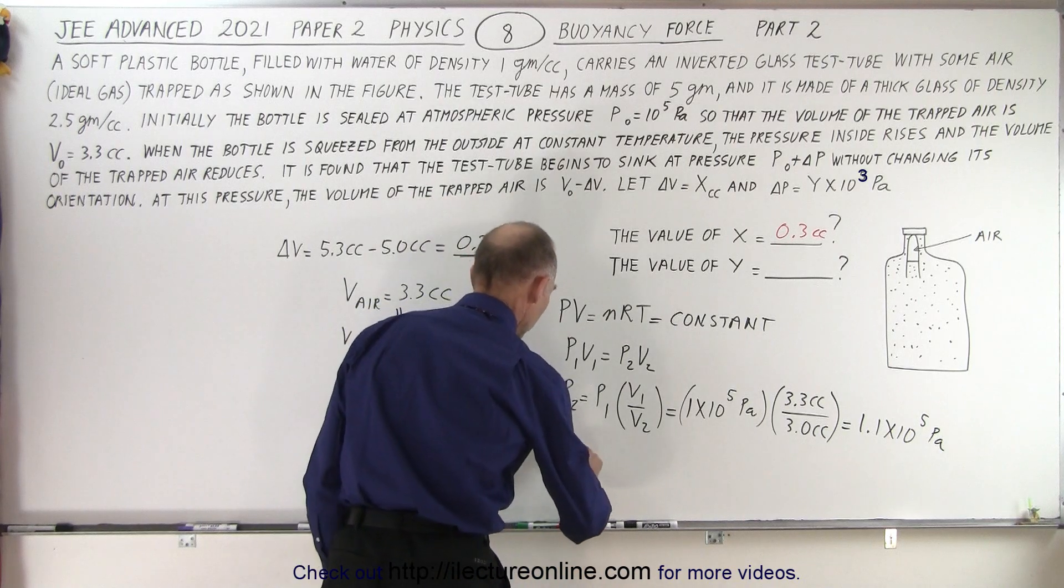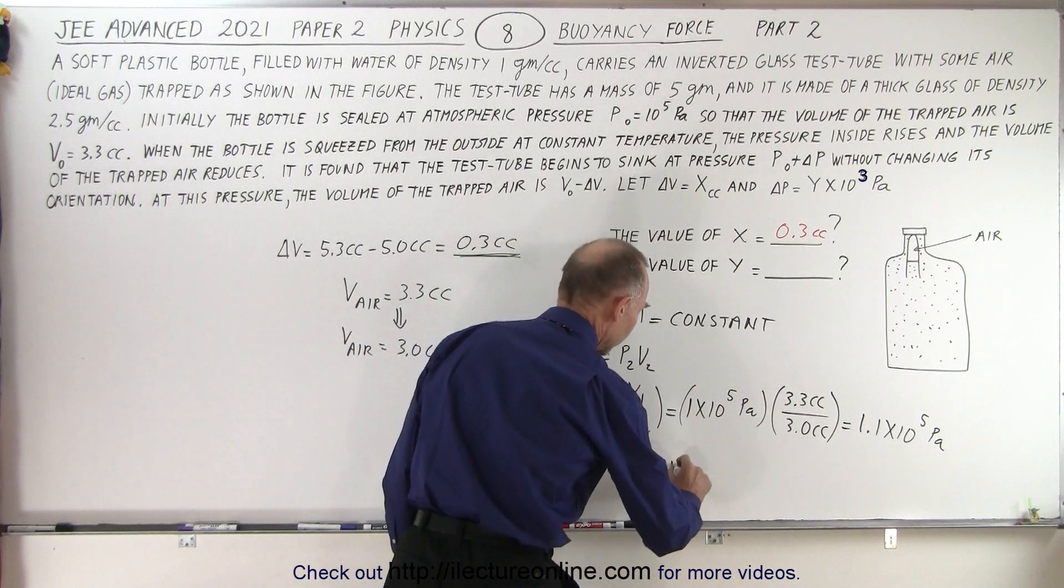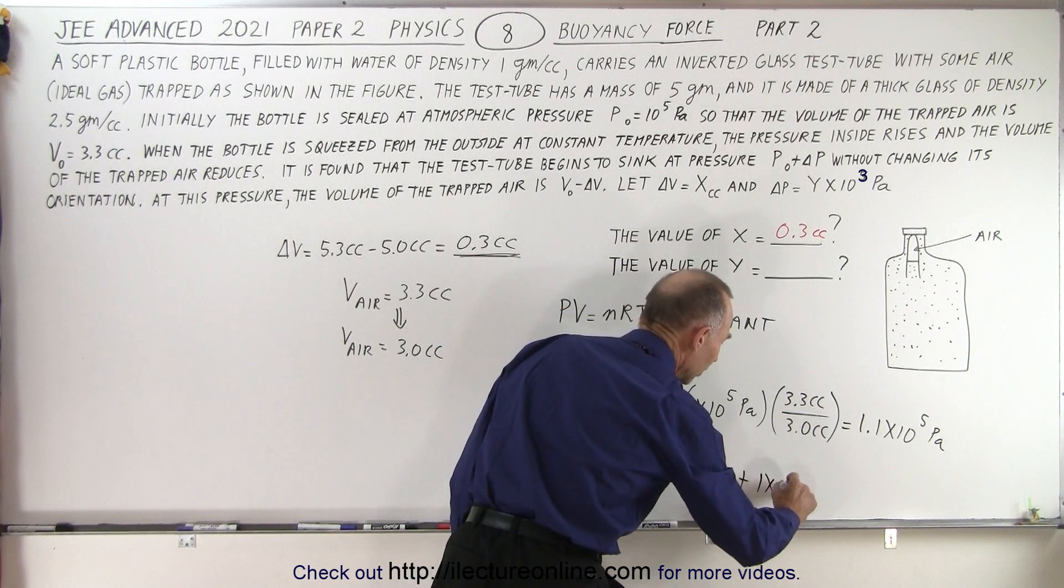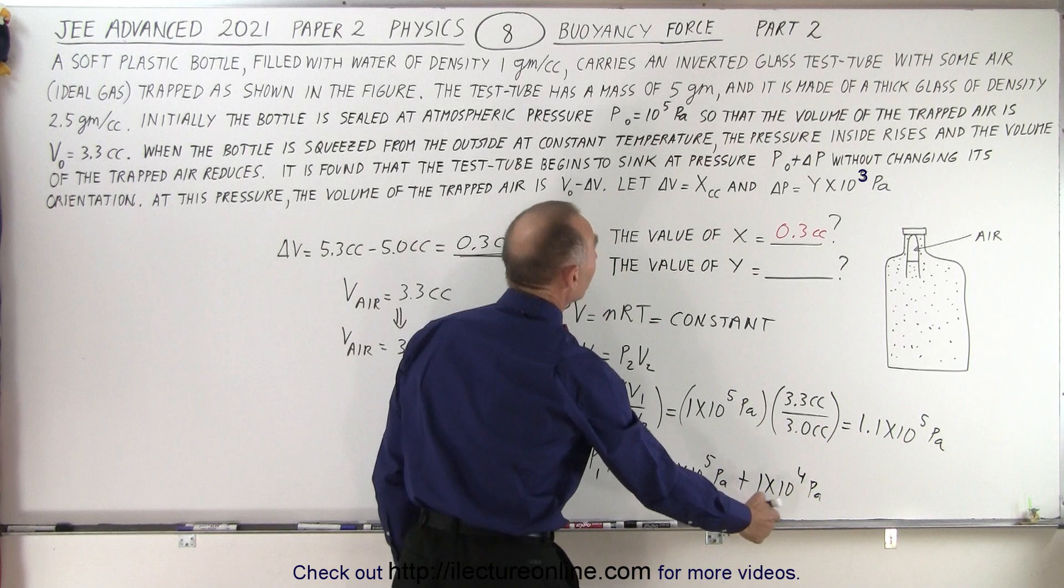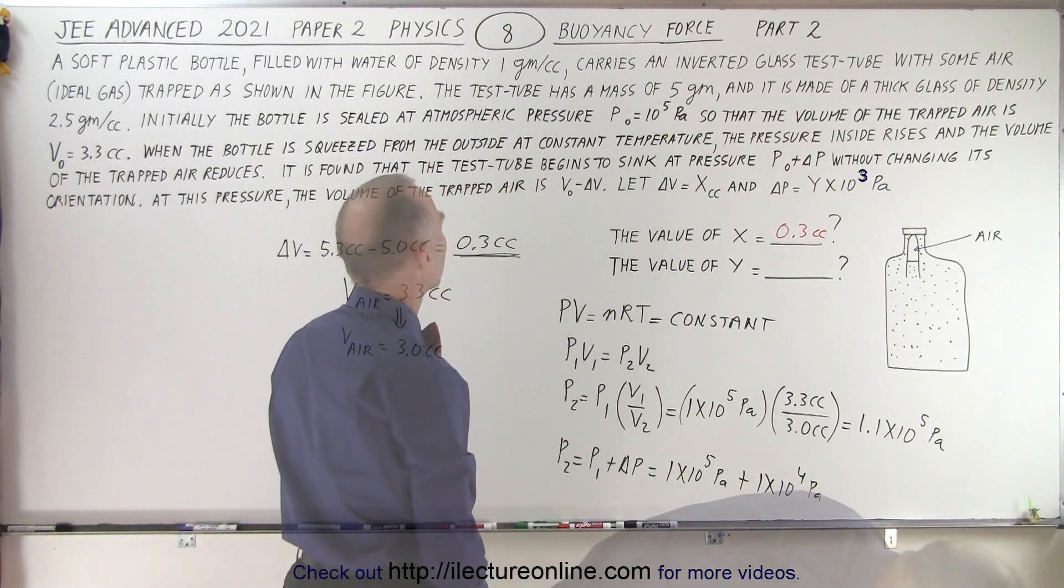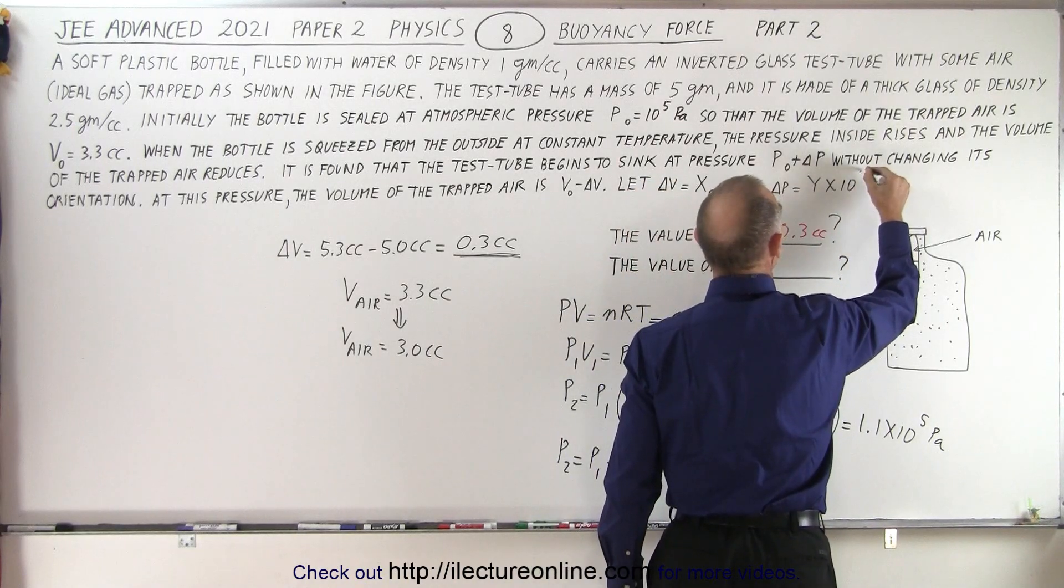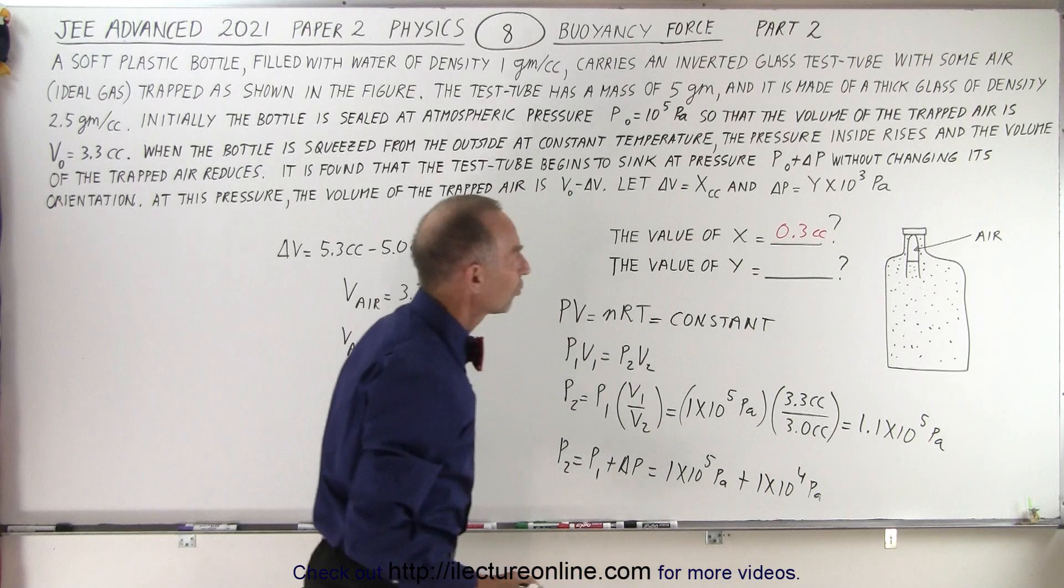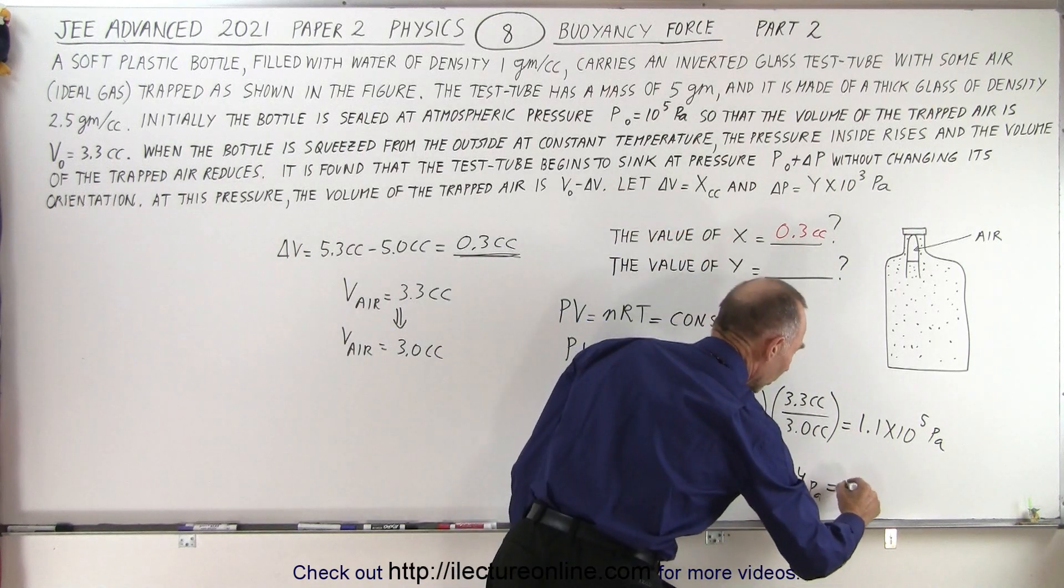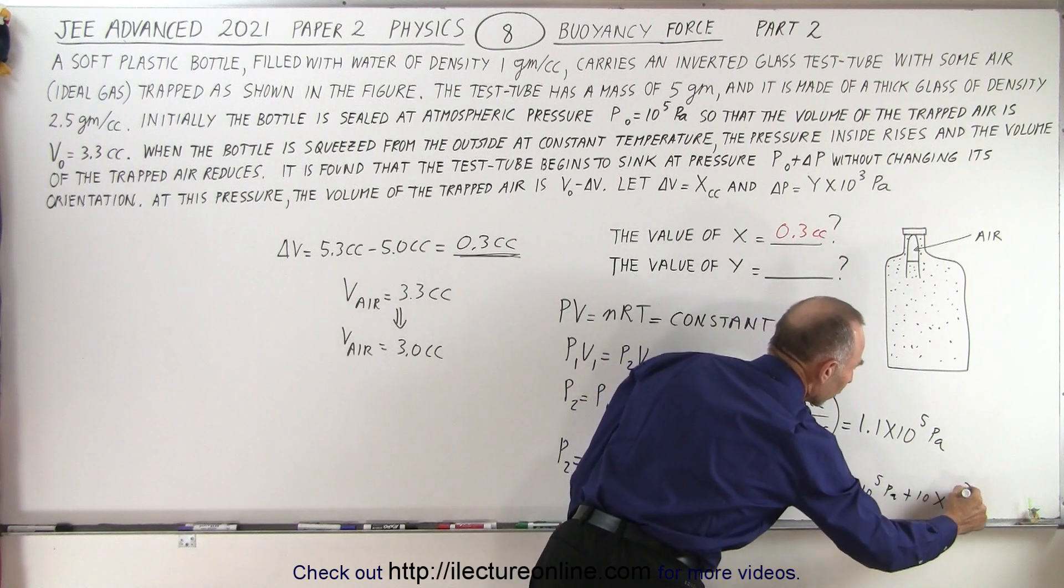That means that P2 equals P1 plus delta P. In this case P1 was 1 times 10 to the 5th pascals and to that we have to add 1 times 10 to the 4th pascals. But notice that we're looking for Y delta P, and they wanted this in terms of 10 to the 3rd pascals so we need to make a change. This becomes equal to 1 times 10 to the 5th pascals plus 10 times 10 to the 3rd pascals.